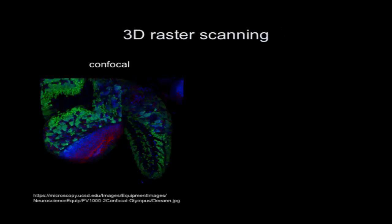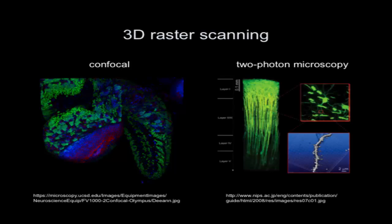Confocal microscopy can give you beautiful images, and two-photon or three-photon microscopy can do the same. In both cases you have confinement. In confocal, it's on the detection side; in nonlinear optical microscopy it's on the excitation side. Distinguish those two properties from one another.